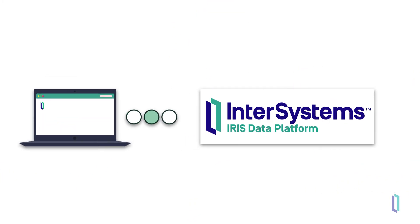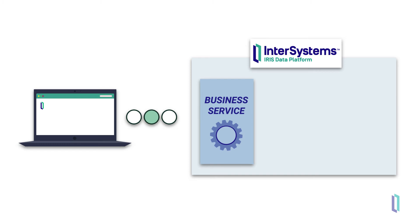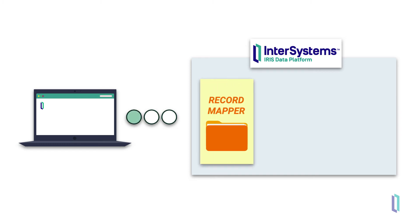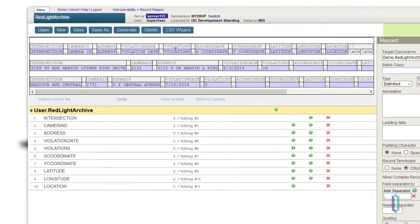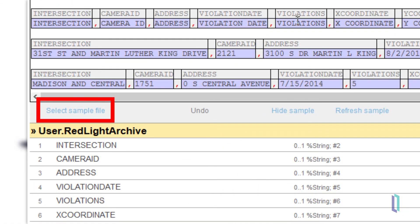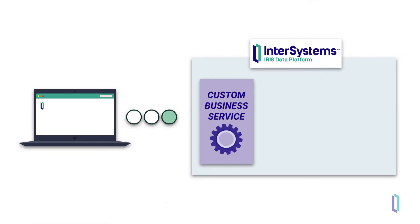InterSystems IRIS consumes data from multiple systems using what are known as business services. Tools such as the Record Mapper are provided to quickly generate a business service based on a sample file, or you can code your own business service to consume data in just the way you need.